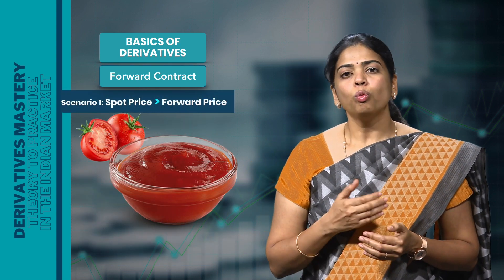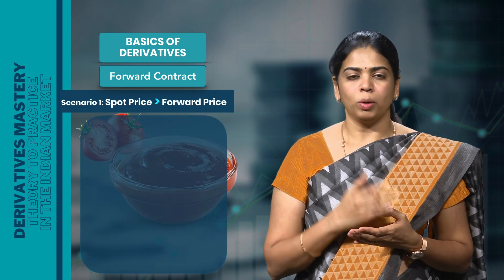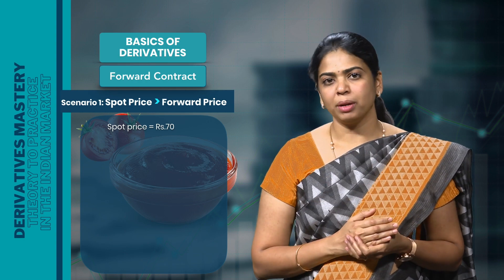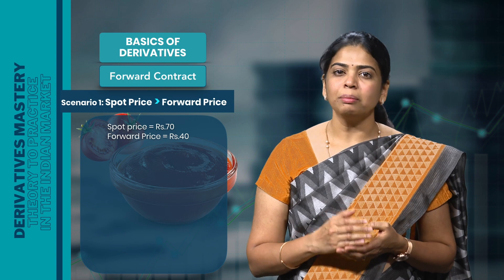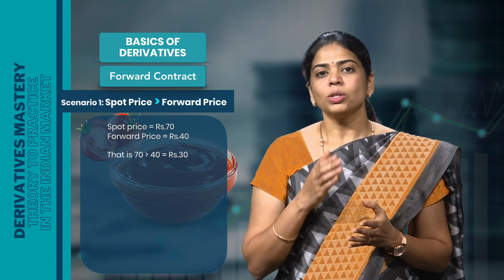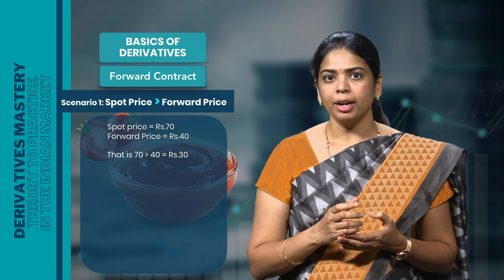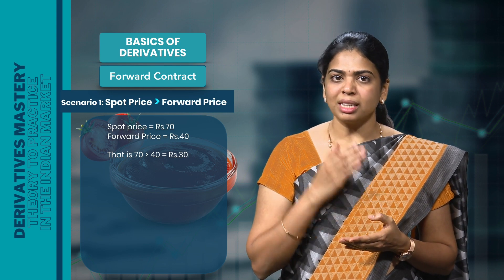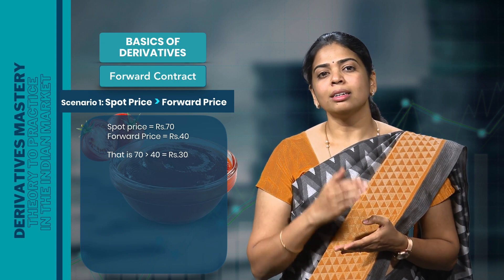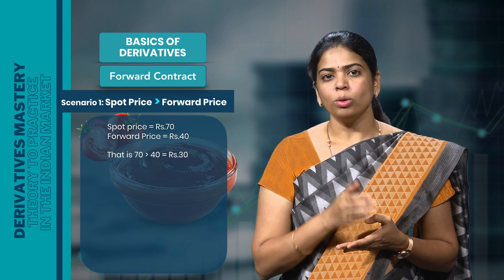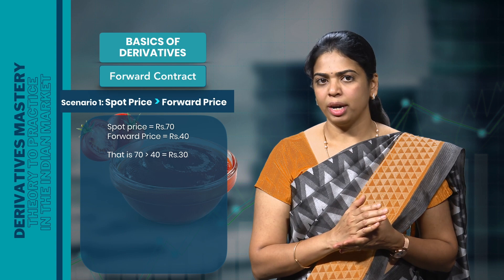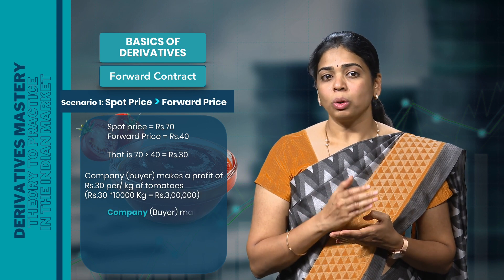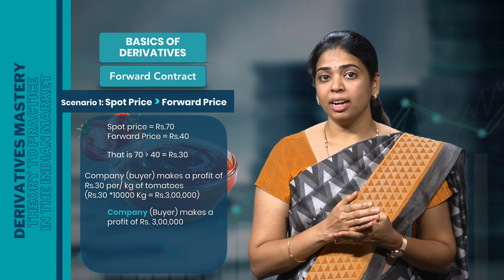In scenario 1, what if the spot price on expiry is more than the forward price? If the spot price of tomatoes on the date of expiry is Rs 70 per kg, let us calculate the profit or loss incurred by both parties. In this case, the spot price is much higher than the agreed price. Though the tomatoes are selling at Rs 70 in the market, the trader is supposed to sell 10,000 kgs at Rs 40 to the ketchup company as per the forward agreement. Therefore, the buyer — the ketchup company — makes a profit of Rs 3,00,000, and the trader loses the same amount.